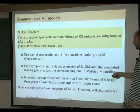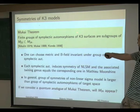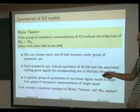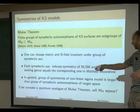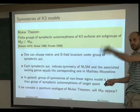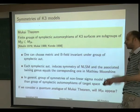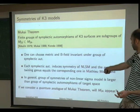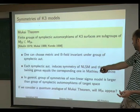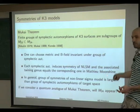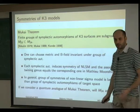All these groups are subgroups of M24, so to any symplectic automorphism one can associate a conjugacy class in M24, and the twining genus computed by the symmetry equals the one in Mathieu Moonshine.